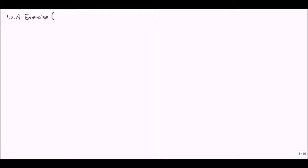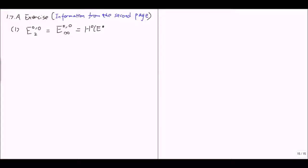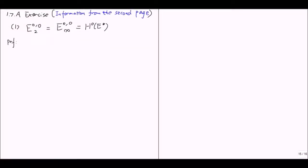Now let's use the partial definition and the properties to prove the following exercise. The exercise is about the information from the second page. First, let's show that at the origin, E⁰⁰ on the second page is equal to E⁰⁰∞ — meaning it stabilizes after the second page — and this is equal to the zeroth cohomology of the total complex.